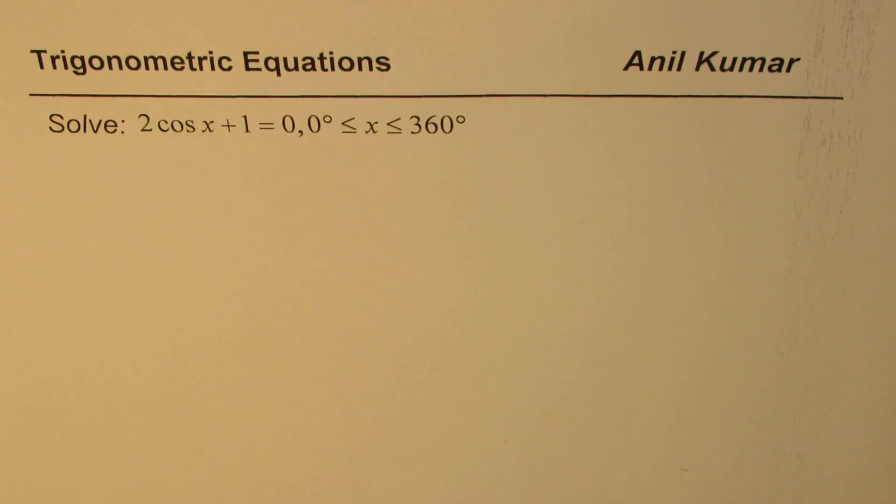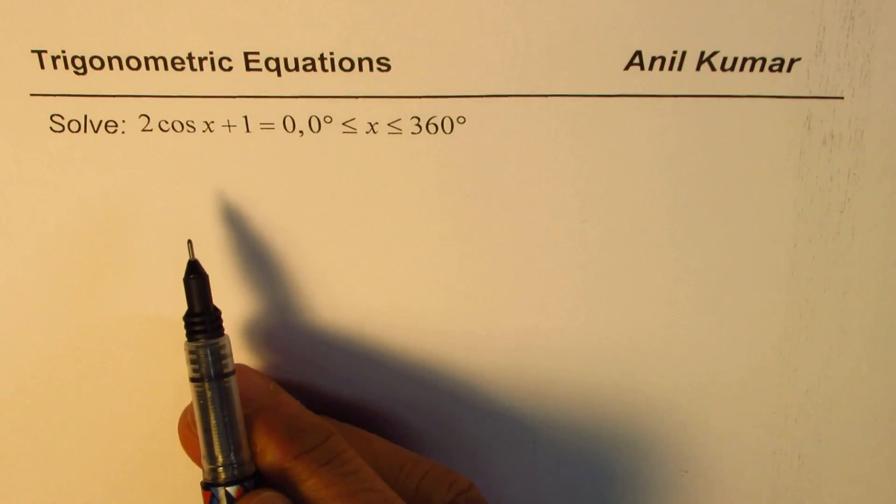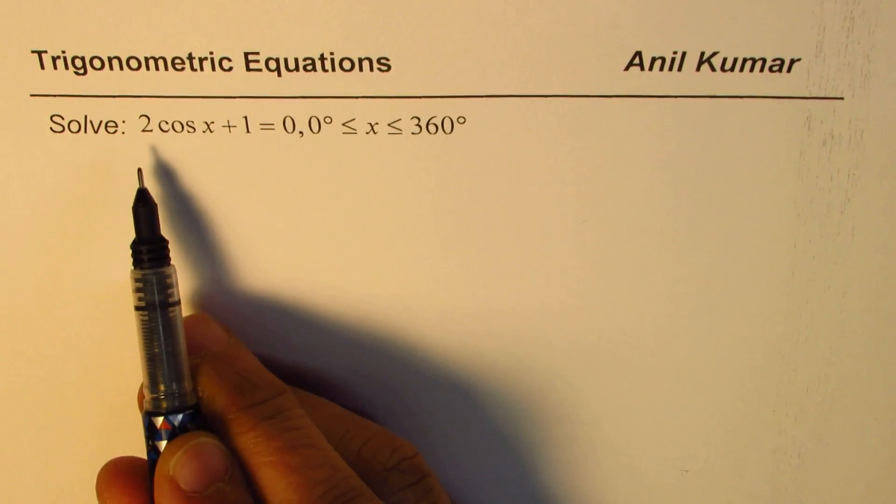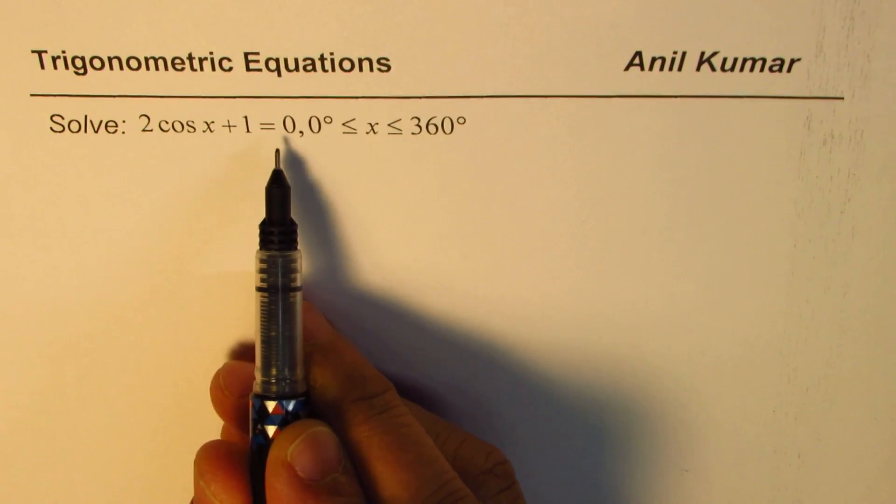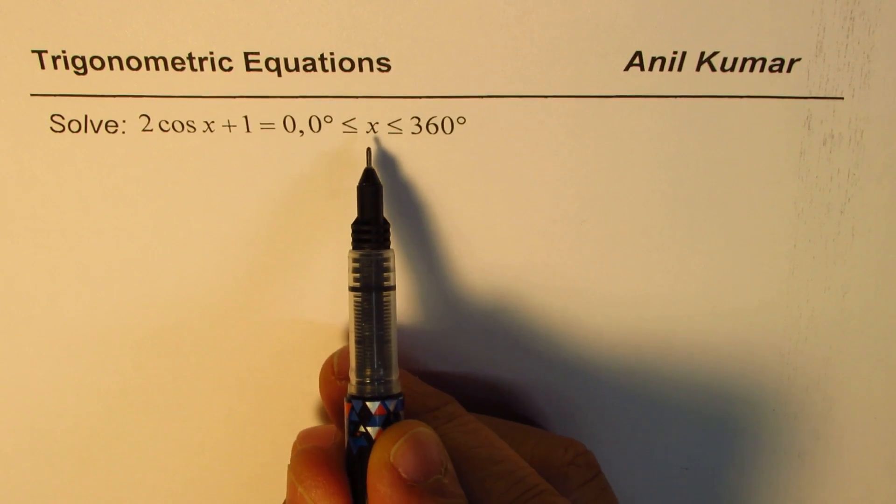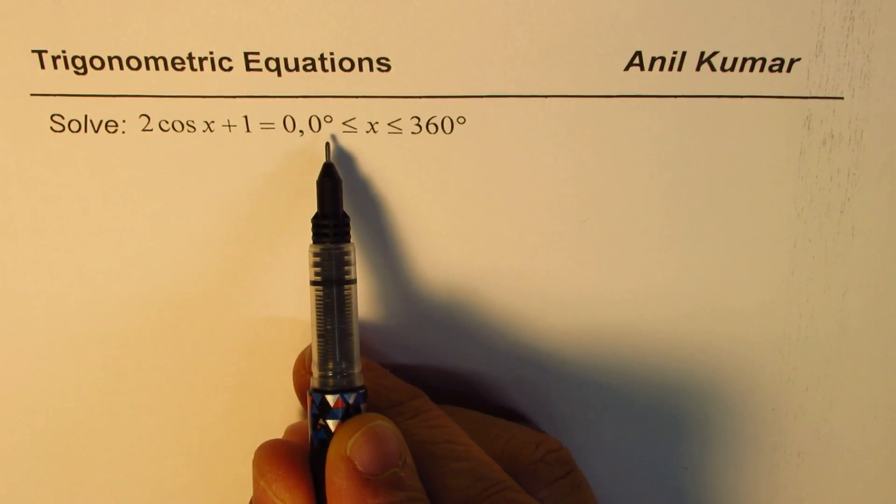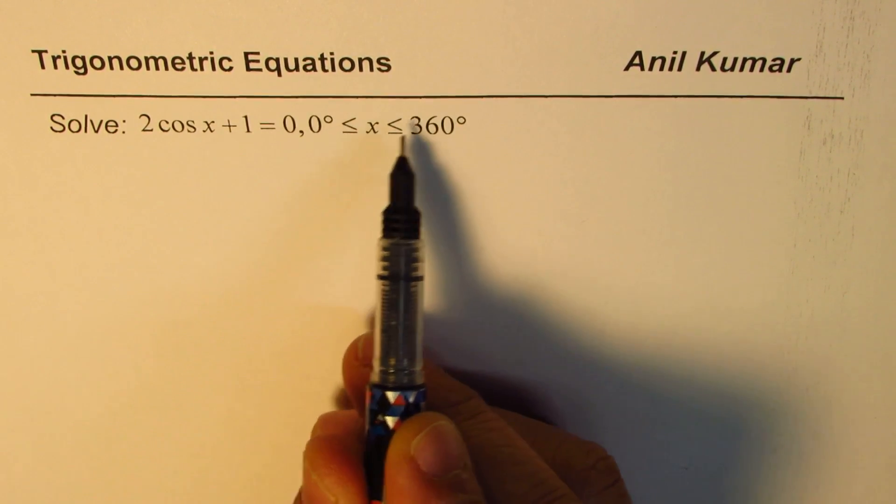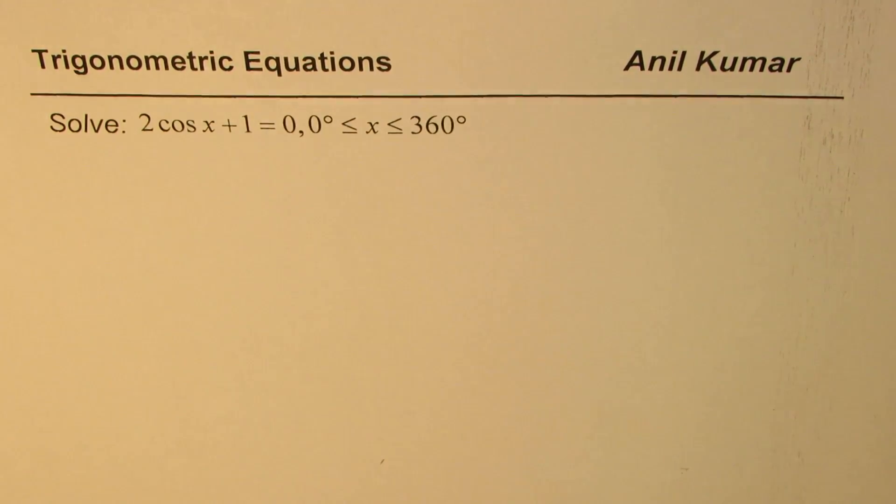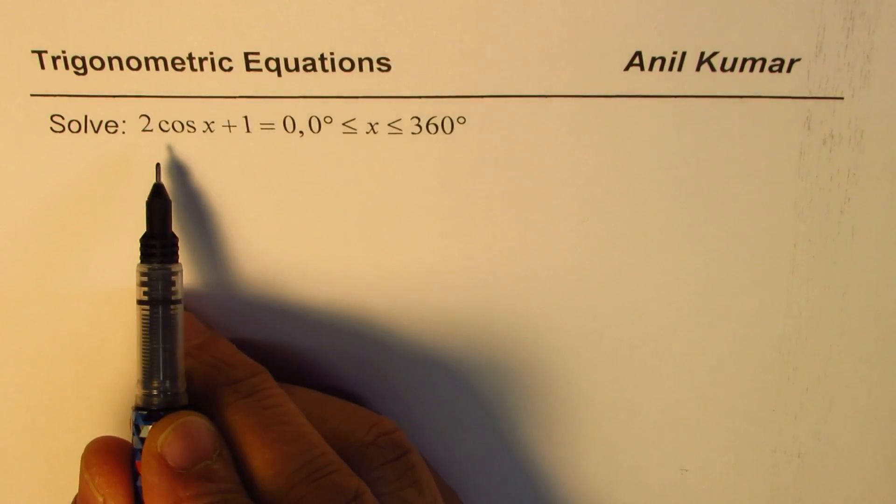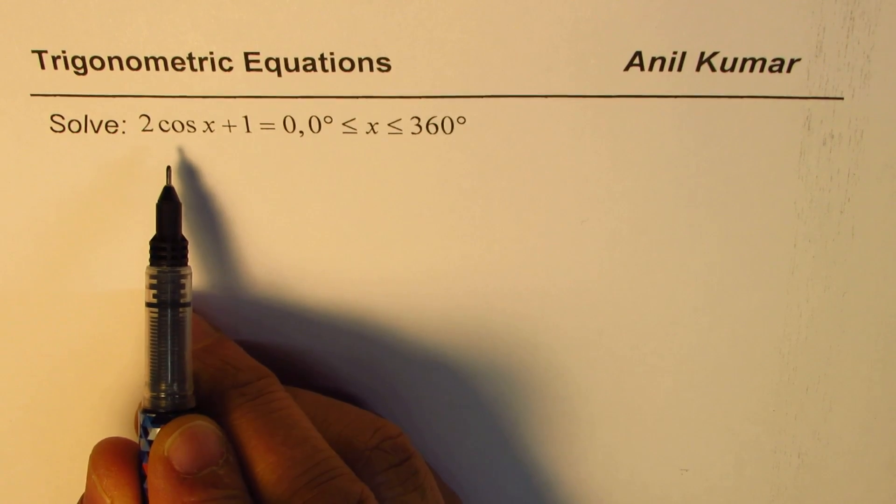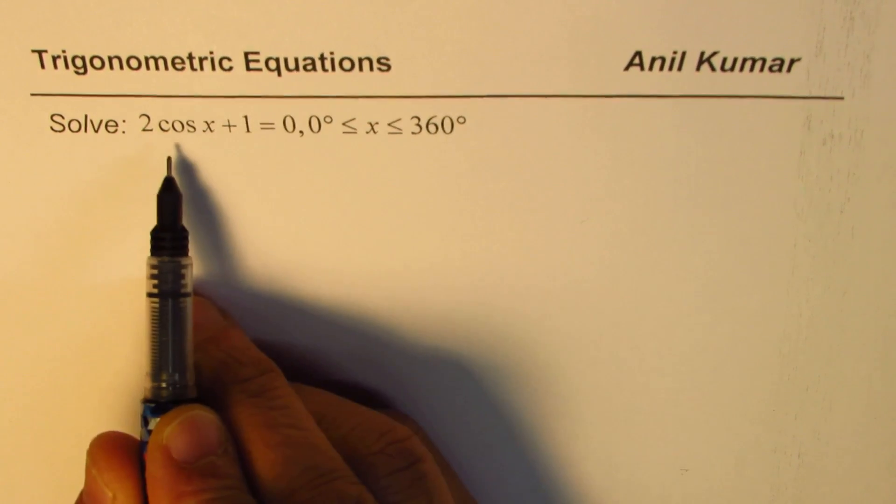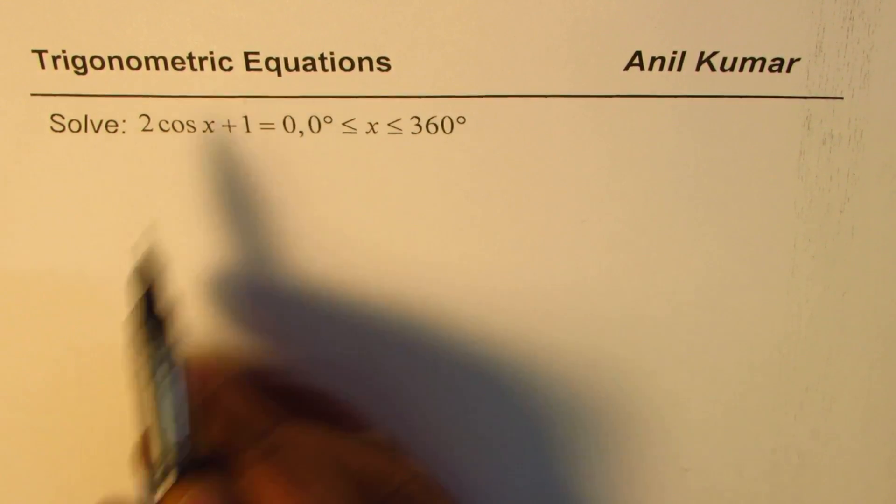I am Anil Kumar and in this series we'll try to understand how to solve trigonometric equations. Let's begin with a very simple example. We need to solve 2 cos x plus 1 equals 0, where x is greater than or equal to 0 degrees and less than or equal to 360 degrees. Now any equation which has trigonometric ratios in it will be treated as a trigonometric equation.